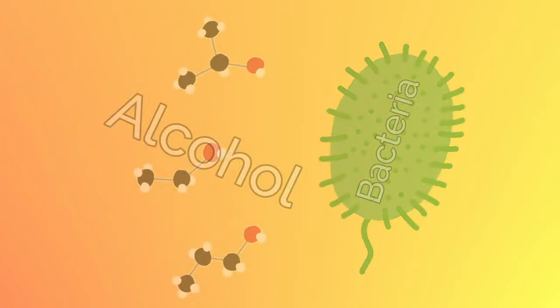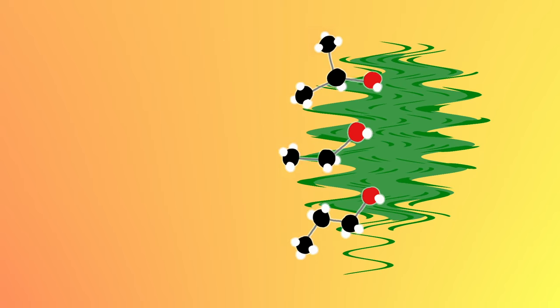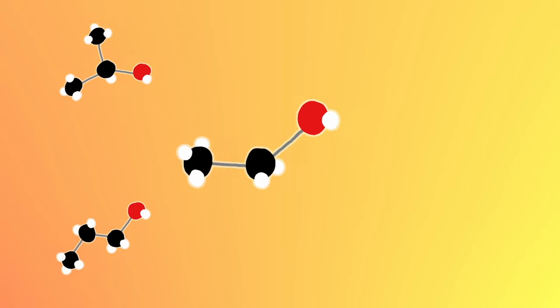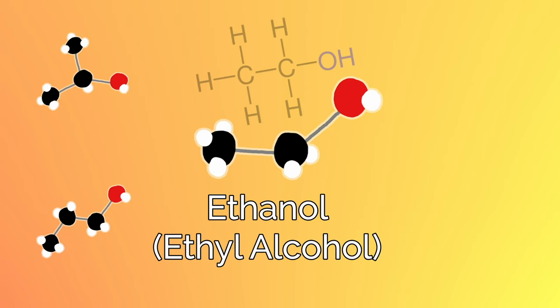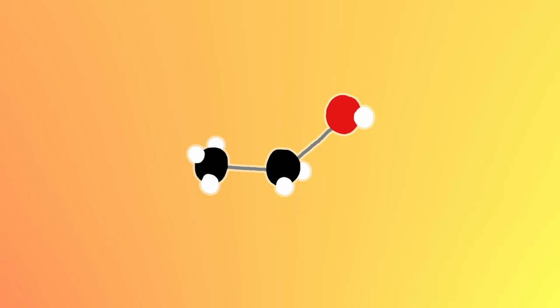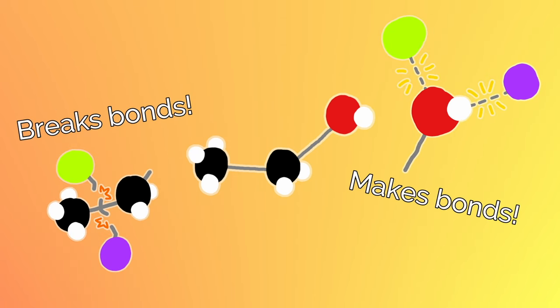Alcohol kills bacteria by disrupting the chemical structure of their components. The most commonly used type of alcohol is ethanol, usually found in hand sanitizers. Its hydrophobic and hydrophilic ends enable modifying chemical bonds, changing the molecular structure of components.